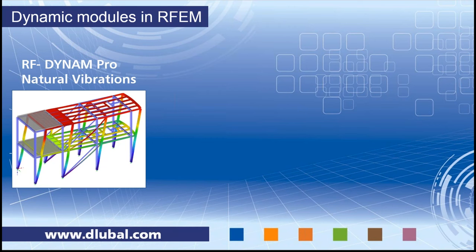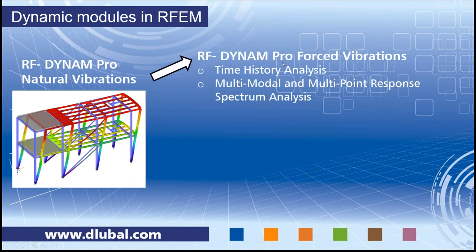You can directly import masses from load cases, build combinations of masses in so-called mass combinations, and import stiffness modifications, axial forces, failing or deactivated members, or stiffnesses from RF Concrete as initial conditions. We have four eigenvalue solvers available, which I'll explain in more detail later. Based on this basic module, you have RF-Dynam Pro Forced Vibration, which can perform a time history analysis and a multimodal multipoint response spectrum analysis. This is a large module and we are not going to discuss it today — it will be covered in a later webinar this year.